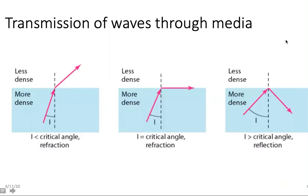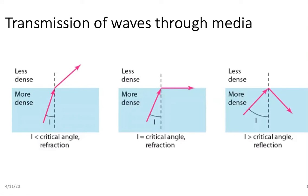Look at this diagram showing transmission of waves through a medium. We have two media: one more dense and one less dense. An example is glass and air — glass is the more dense medium and air is the less dense medium.